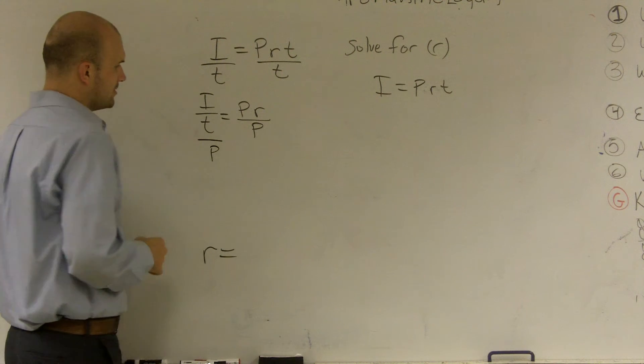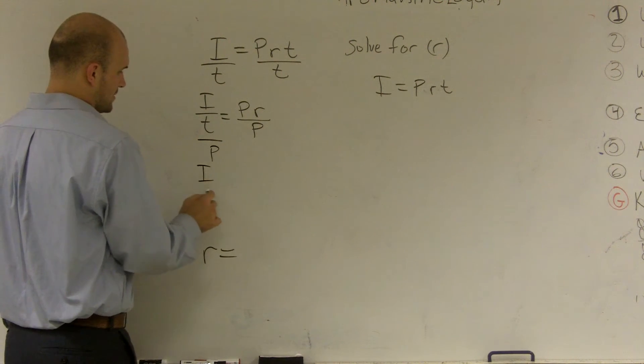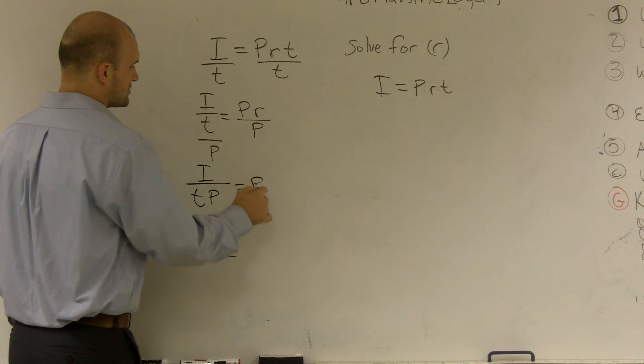I guess p over 1, 1p, yep. Divide by p, so therefore, it's going to equal i over tp equals r.